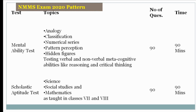The Mental Ability Test covers topics including analogy, classification, numerical series, pattern, perception, and hidden figures. It tests verbal and non-verbal metacognitive abilities like reasoning and critical thinking. This paper has 90 questions, 90 marks, and 90 minutes duration.